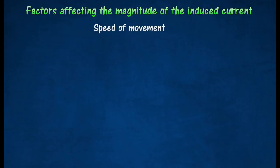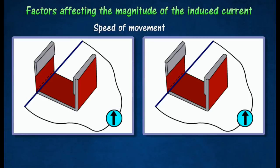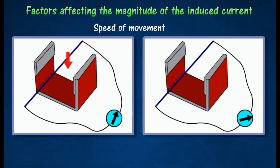Induced current can be increased by moving the magnet or the solenoid at a higher speed. When the magnet is moved at a faster speed into the solenoid, the galvanometer shows a larger deflection, indicating a larger current is induced in the solenoid.